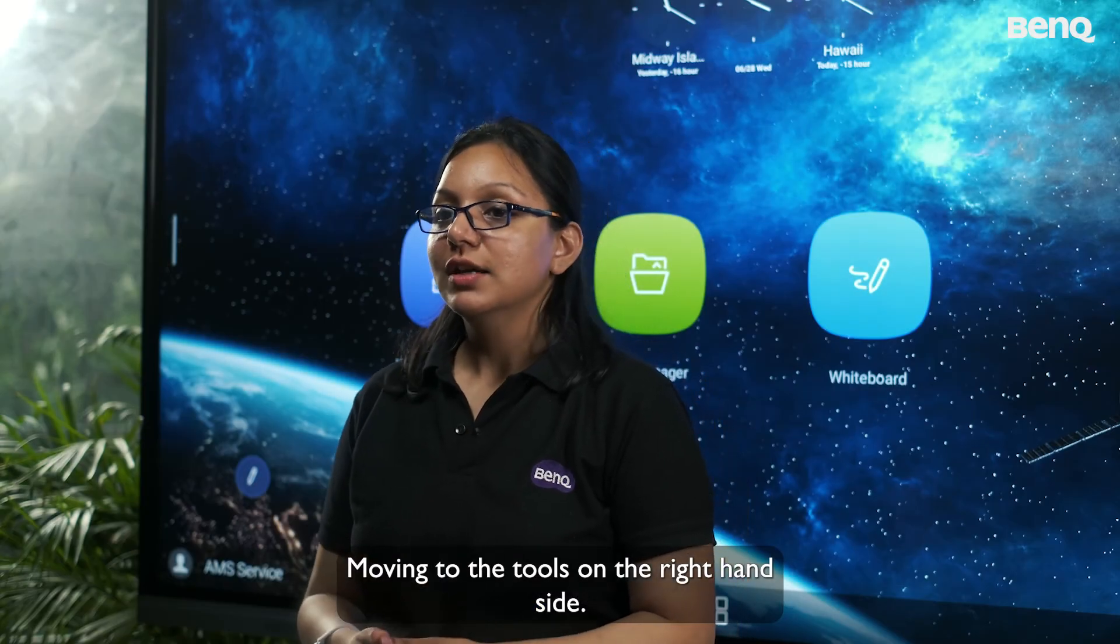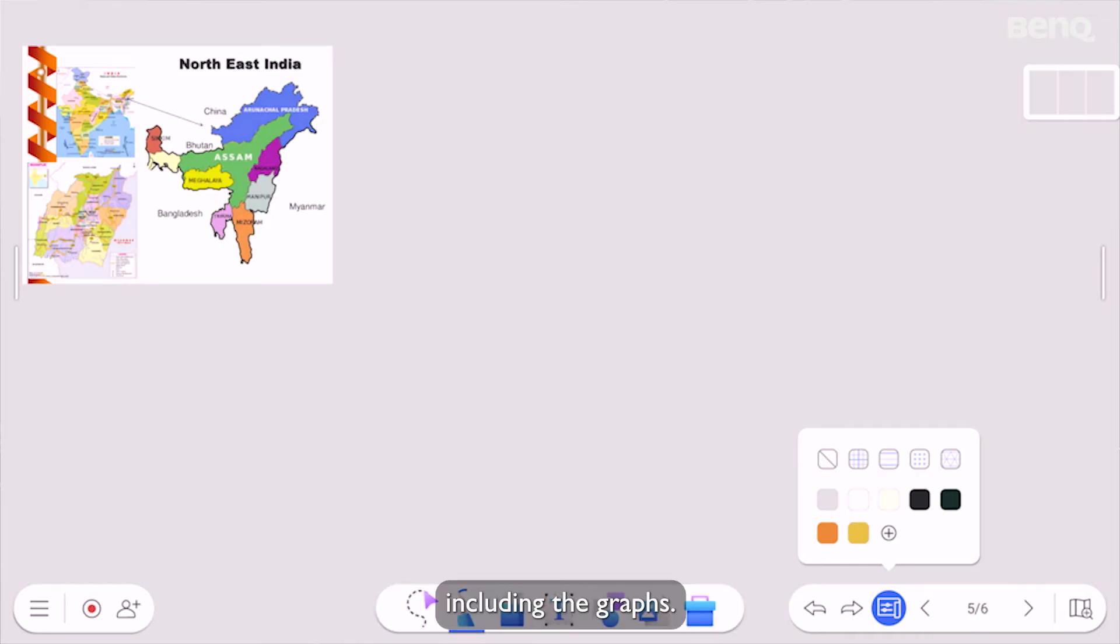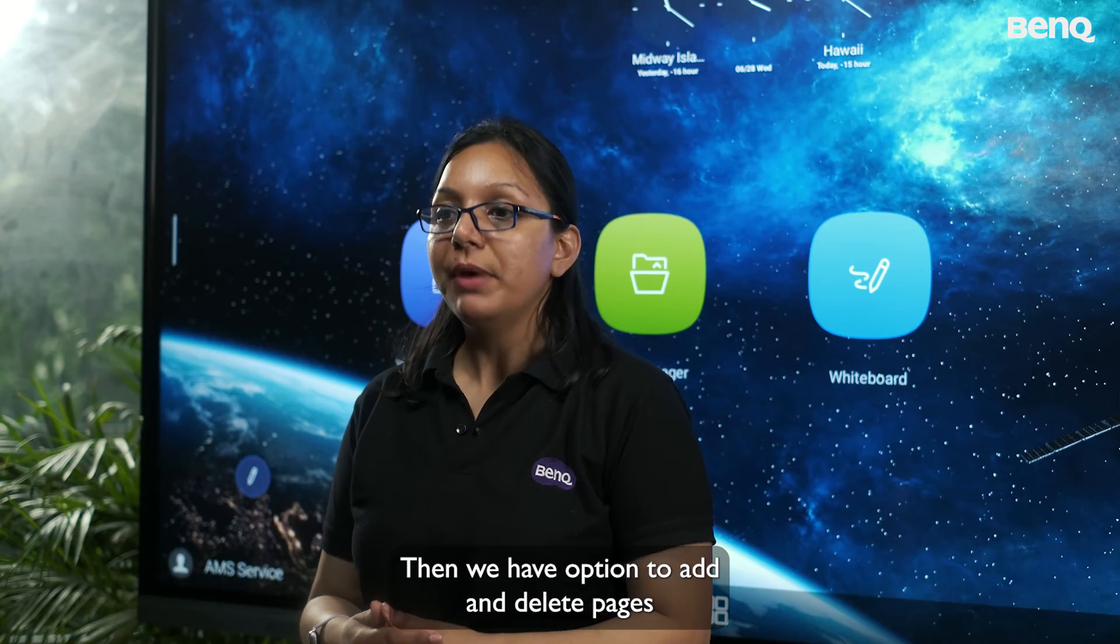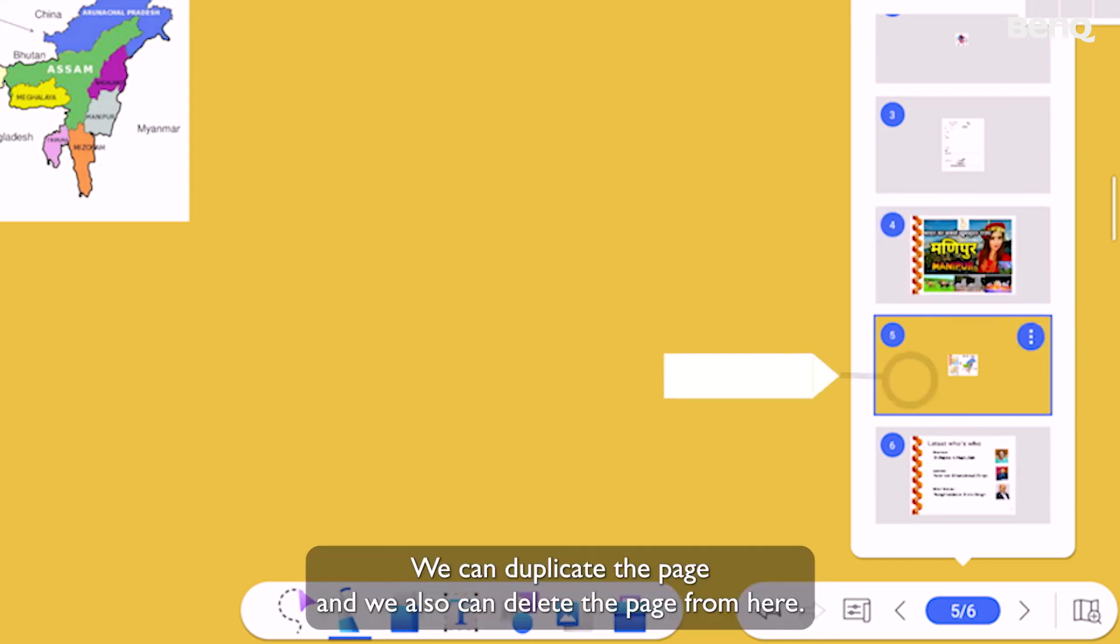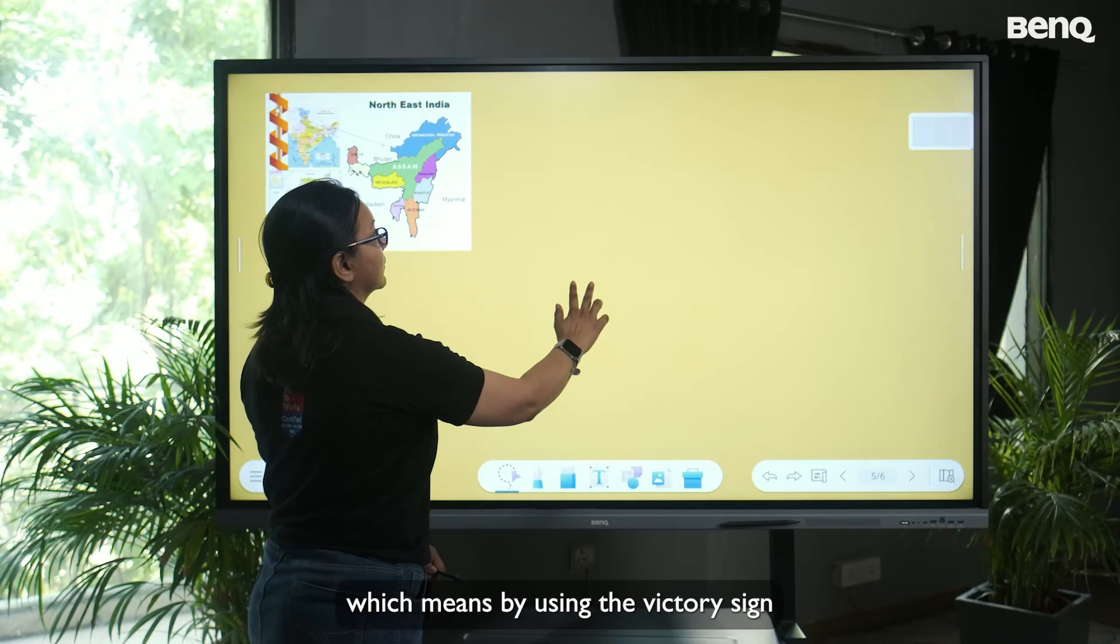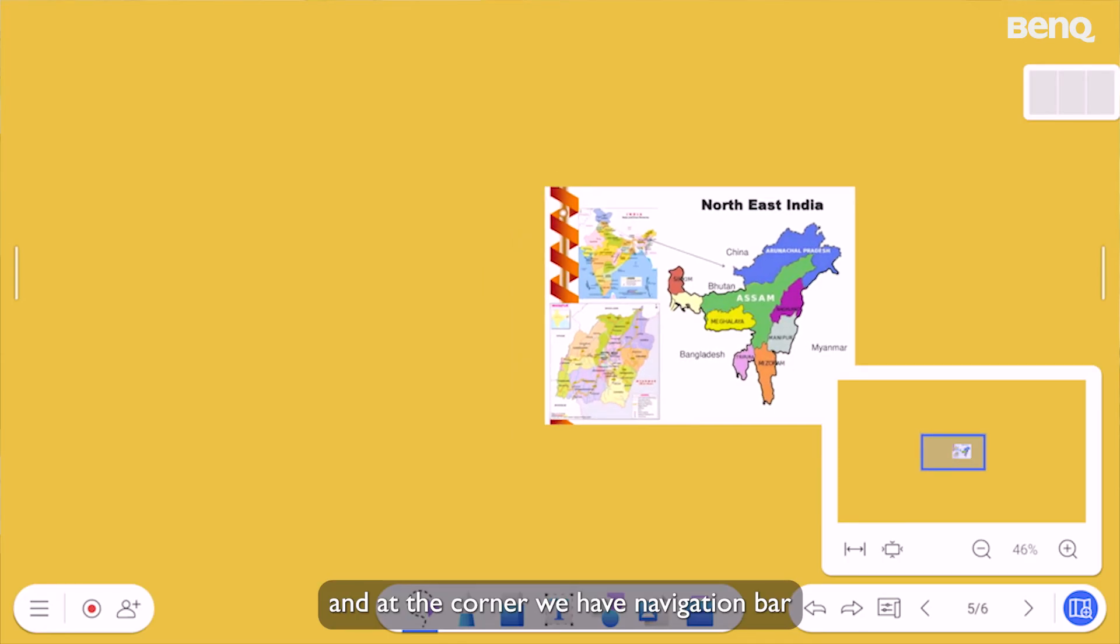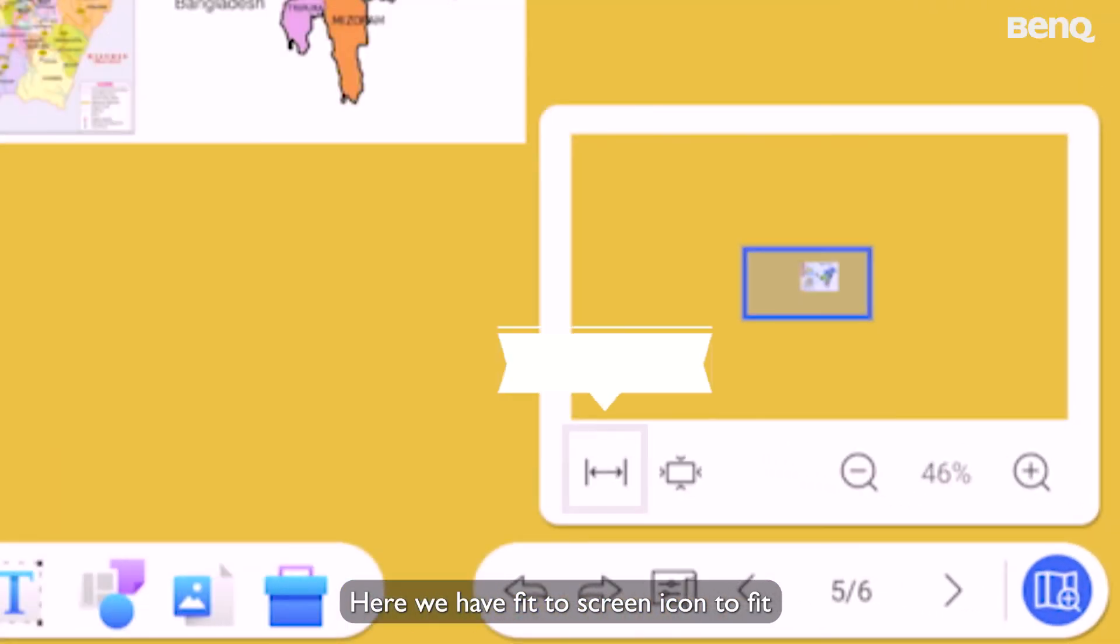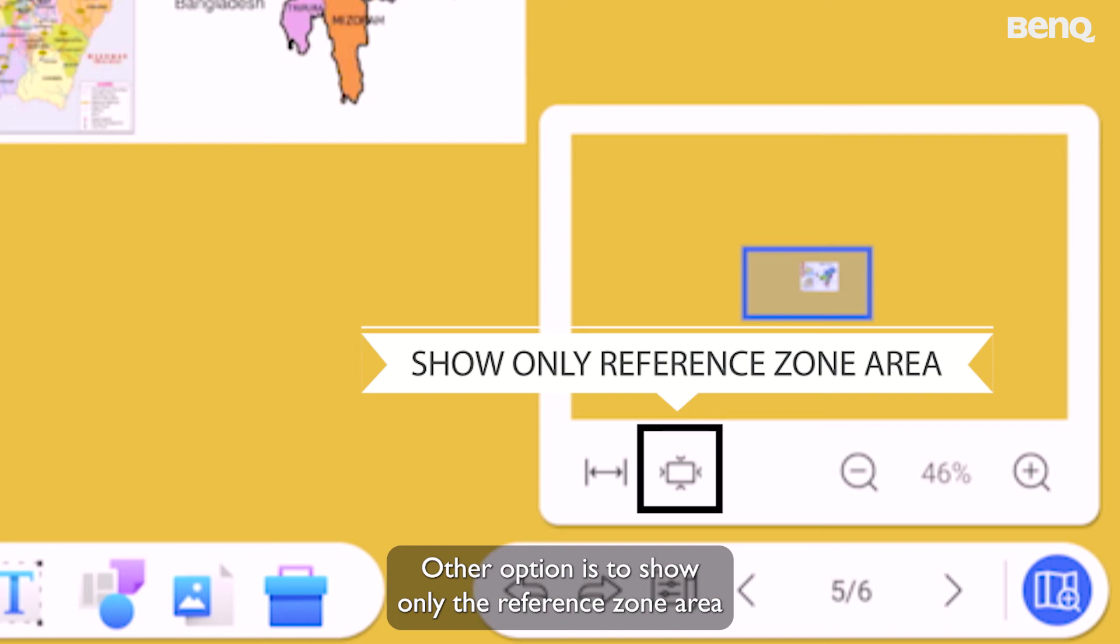Moving to the tools on the right hand side, first we have the tool to undo and redo the activities. From here, you can set any color of your choice on the board, including the graphs. Then we have option to add and delete pages, where you can add up to 999 pages at a time on a single canvas. We can preview the pages and can change its position. We can duplicate the page and we also can delete the page from here. This EZWrite 6 whiteboard is infinitely scalable, which means by using the victory sign, we can easily scroll the page up and down. And at the corner, we have navigation bar, which allows you to move around the page. Here we have fit to screen icon to fit all the content on the canvas to be seen at once. Other option is to show only the reference zone area.